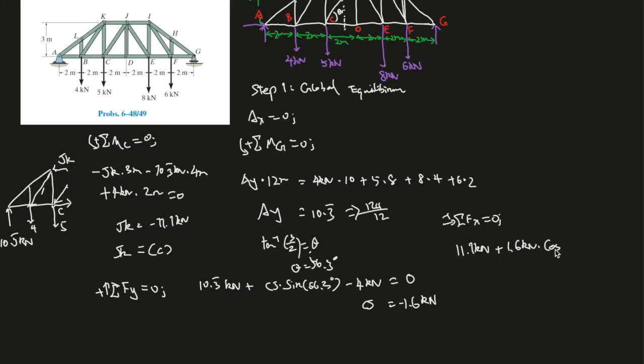This whole thing equals to zero. And CJ in the end you should have gotten negative 1.6 kilonewtons. That means we drew in this direction in the opposite direction as well. So in reality it should be going this way. So CJ is 1.6 kilonewtons and looking at the direction, it's pushing on the joint, same as KJ.